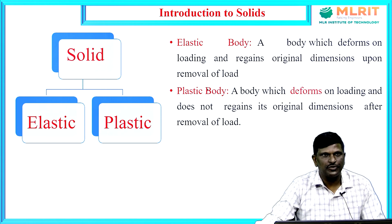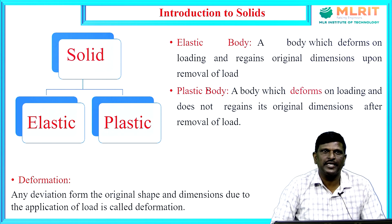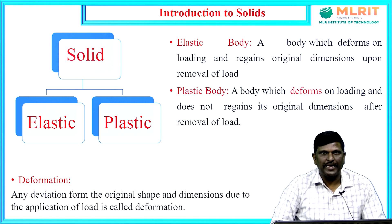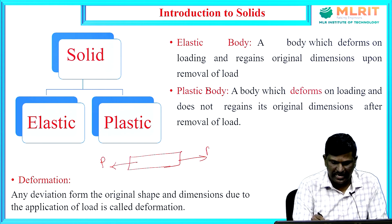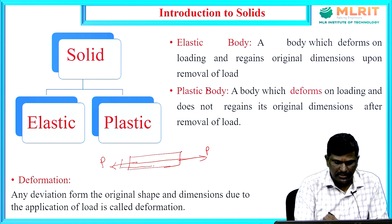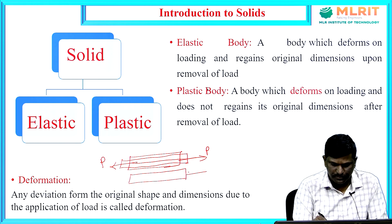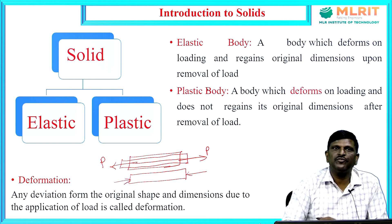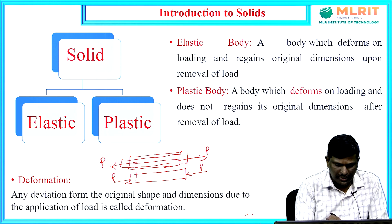Let us pay attention to the word deformation. Deformation is defined as any deviation from original shape and dimensions due to the application of load. For example, if we apply a tensile load on a body — a tensile load is a load which acts away from the center along the axis — due to this load, the body will elongate and the length of the body increases. Similarly, if you apply a compressive load, due to compressive loads the body will shorten or contract.